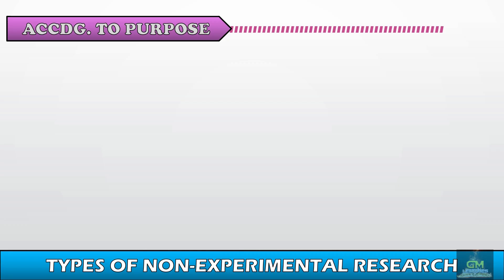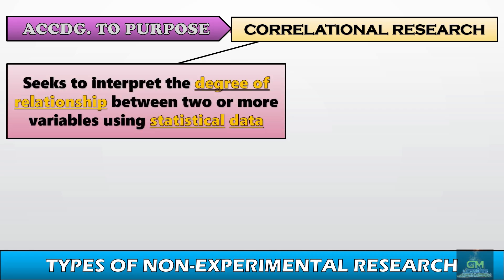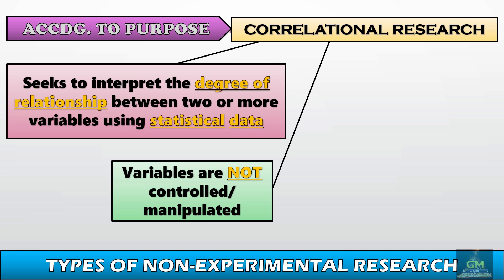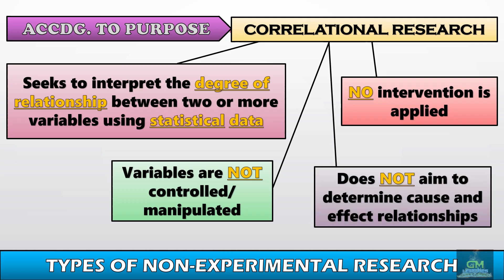The next type of non-experimental research design according to purpose is correlational research. Correlational research seeks to interpret the degree of relationship between two or more variables using statistical data. Similar to survey research, variables are not controlled or manipulated and no intervention is applied. It is worth noting that while correlational research interprets the degree of relationship between variables, it does not aim to determine cause-and-effect relationships.